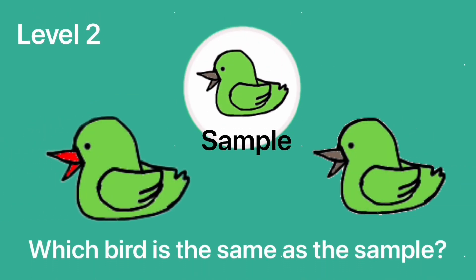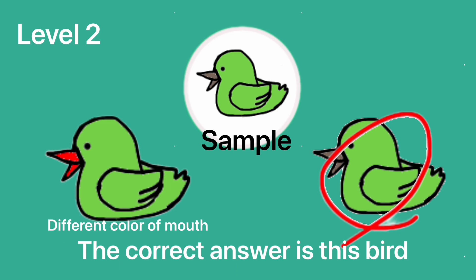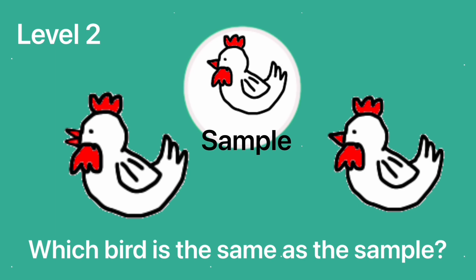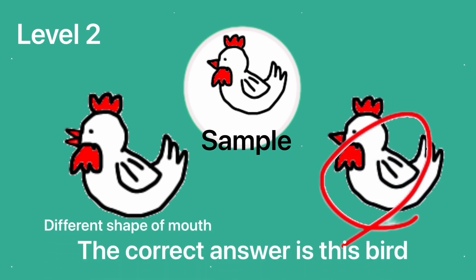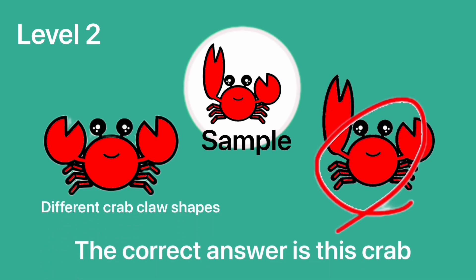Level 2. Which bird is the same as the sample? The correct answer is this bird. The correct answer is this bird. Level 2. Which crab is the same as the sample? The correct answer is this crab.